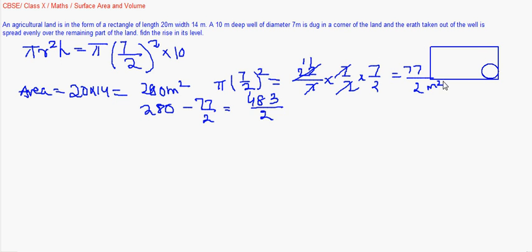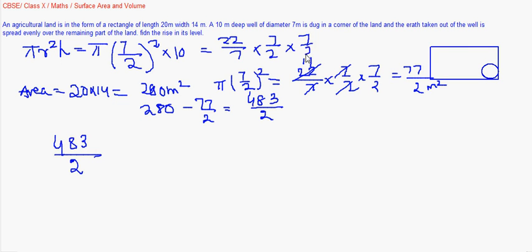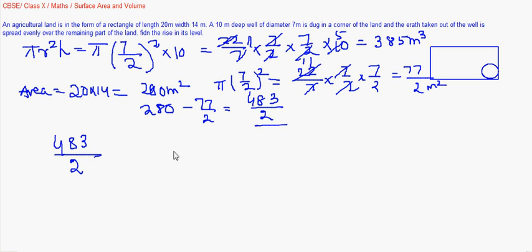The volume of the raised field will be equal to the volume of the dug earth. The volume of the dug earth is 22 by 7 into 7 by 2 into 7 by 2 into 10, which gives 35 times 11, that is 385 cubic meters.